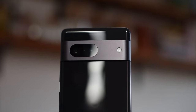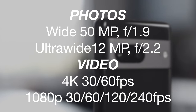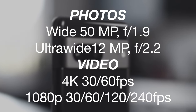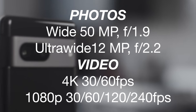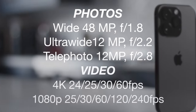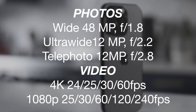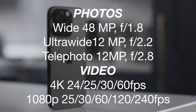First off, the specs. The Google Pixel 7 has a 50 megapixel main sensor at f/1.9 and a 12 megapixel ultrawide at f/2.2. The great thing about the Pixel 7 compared to previous Pixel devices is both the wide and ultrawide can do 4K 60 frames a second. The iPhone 14 Pro has a 48 megapixel main sensor at f/1.8 and a 12 megapixel ultrawide at f/2.2 — all cameras capable of 4K up to 60 frames a second.